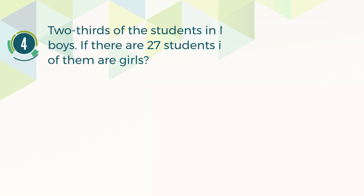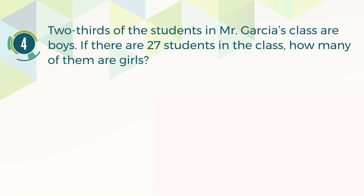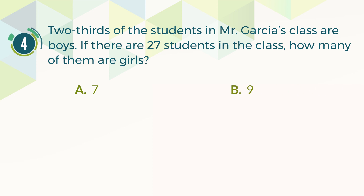Number four. Two-thirds of the students in Mr. Garcia's class are boys. If there are 27 students in the class, how many of them are girls? A. 7. B. 9. C. 12. D. 20.